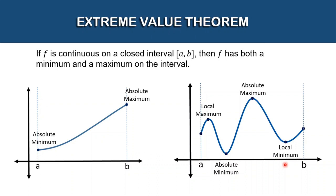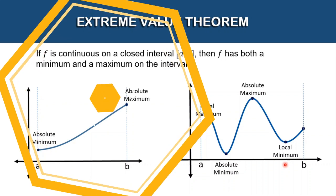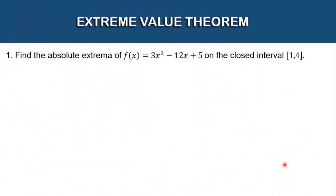Let's try to answer example number 1: Find the absolute extrema. When we say extrema, it pertains to the minimum and the maximum of the function f(x) = 3x² − 12x + 5 on the closed interval 1 to 4.